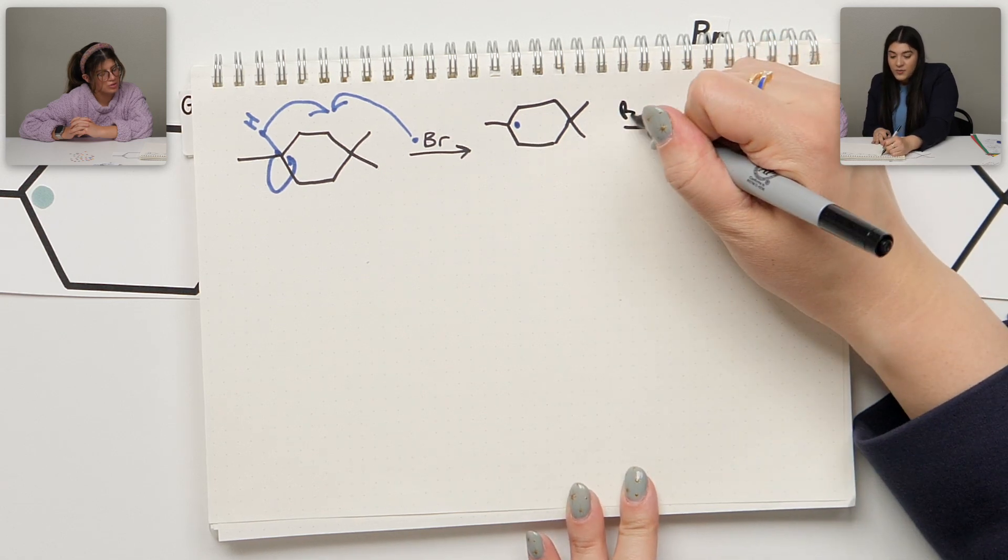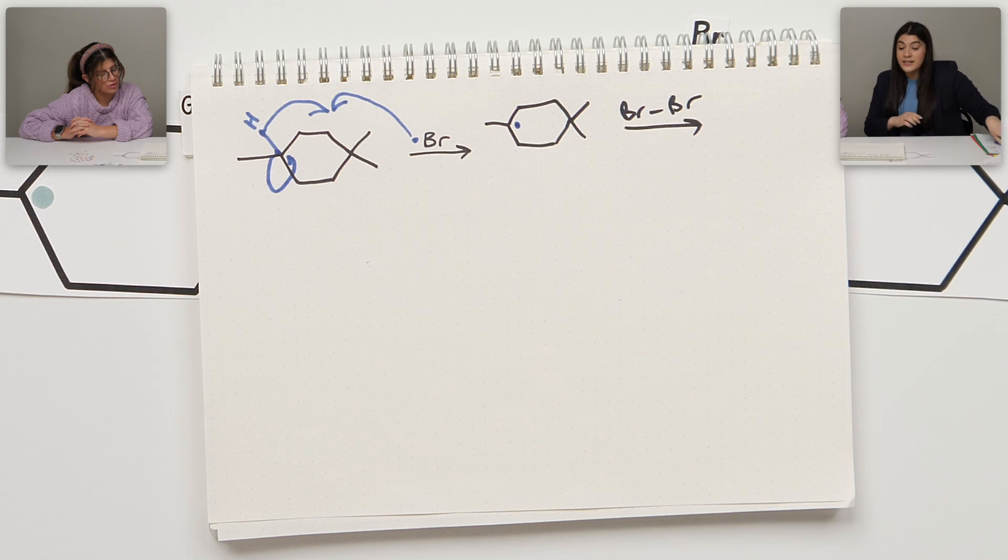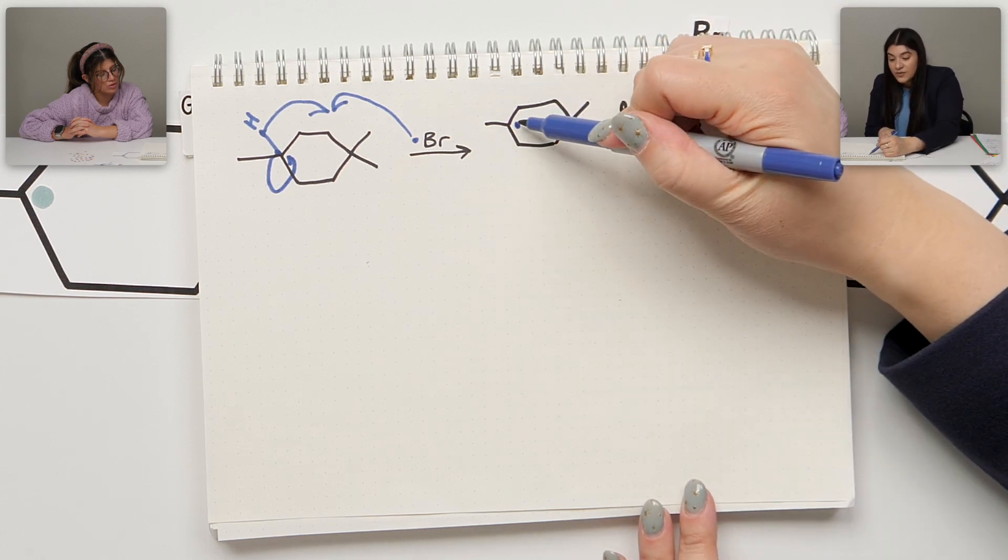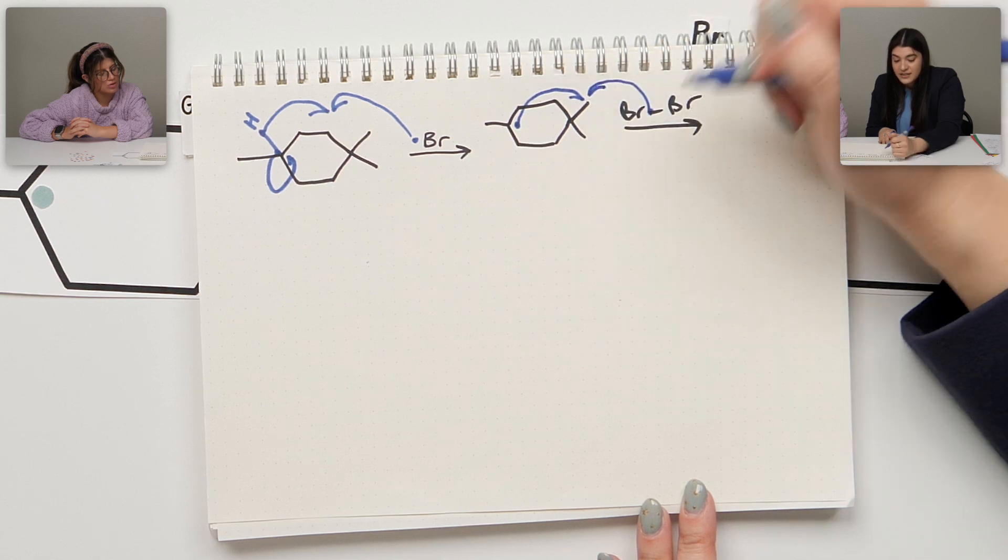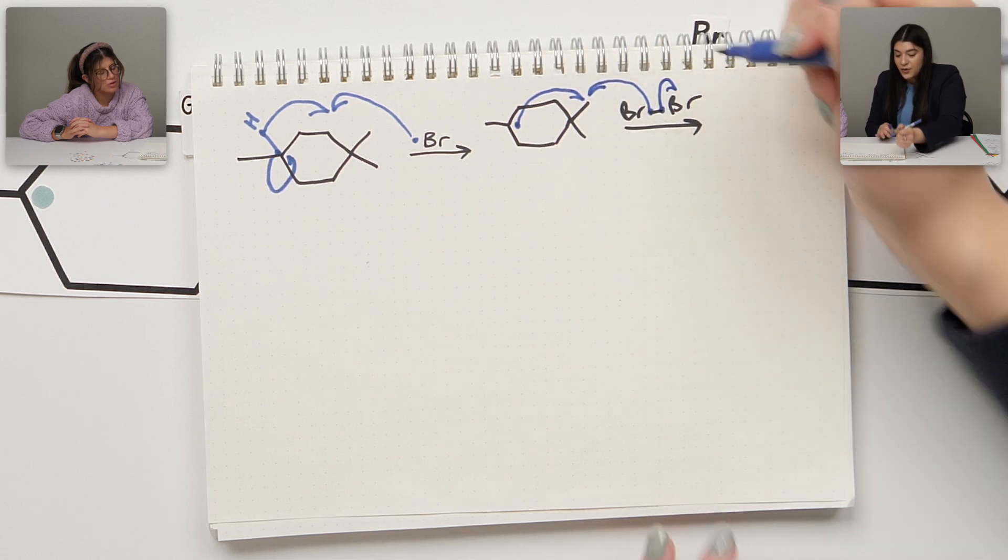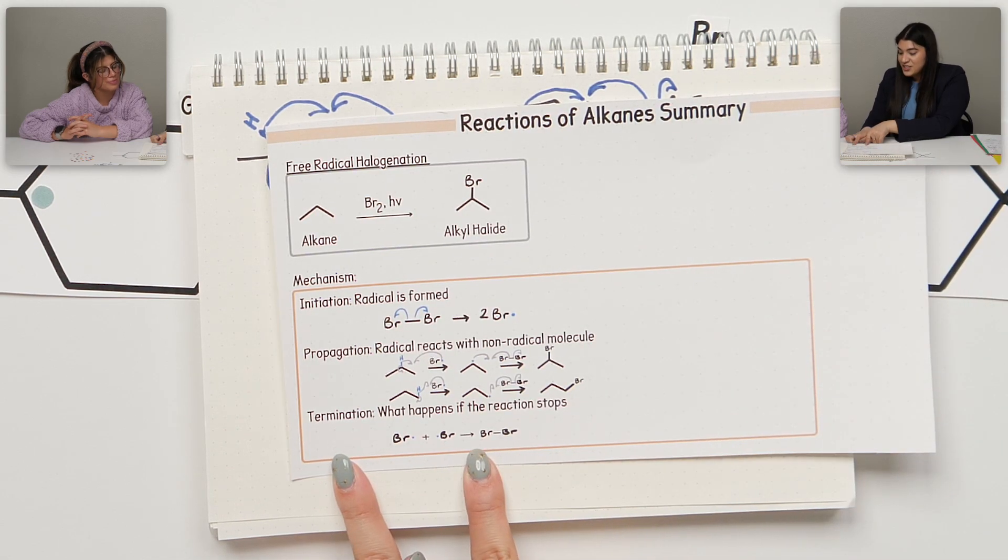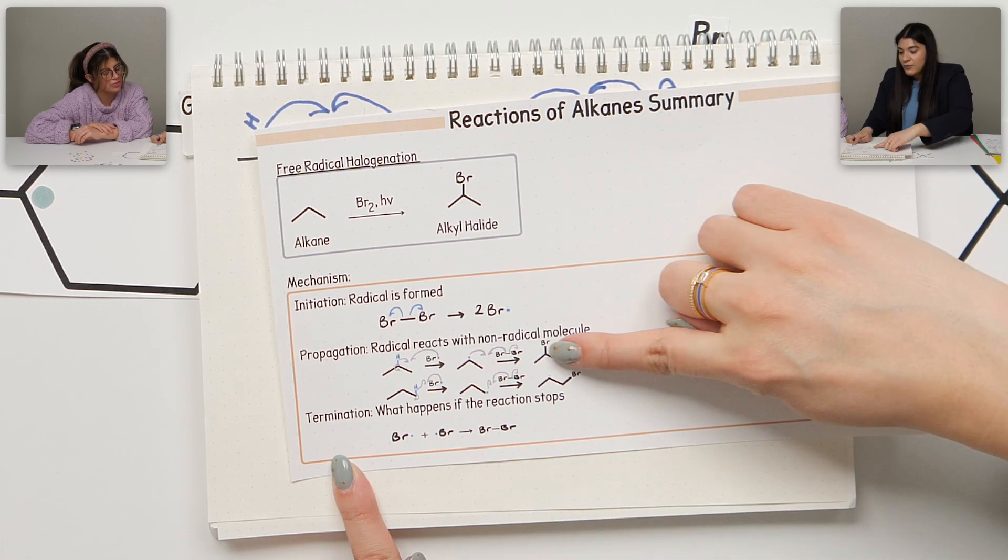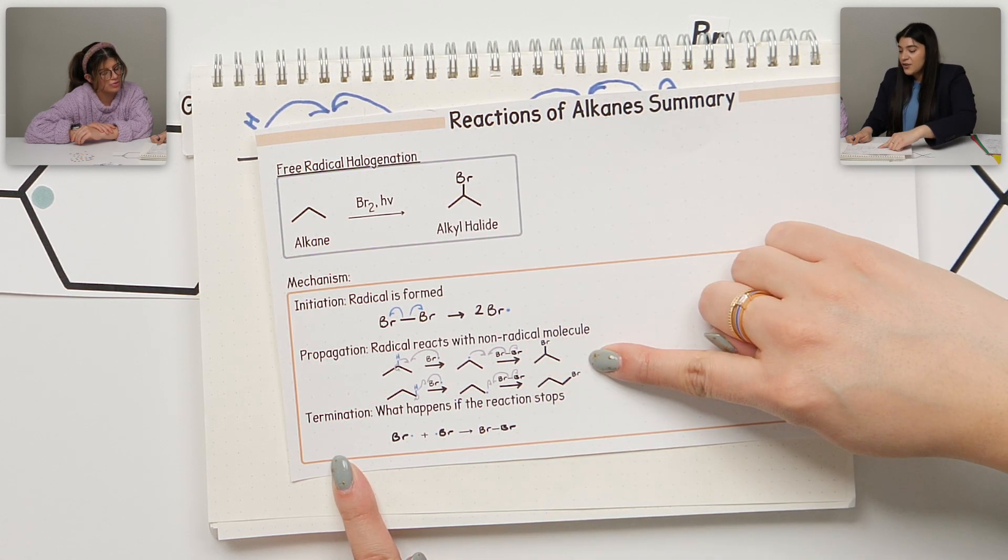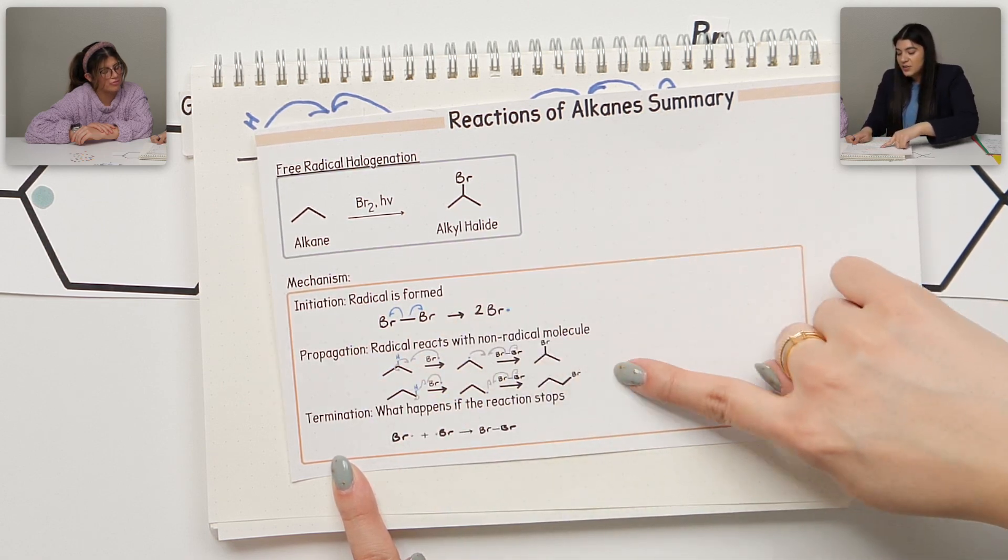So this electron combines with this electron to form that bond, and we reform the radical and it keeps going—propagation. Remember, it keeps going, we're not stopping the reaction, which is termination, which ends it with no radicals at all. However, we have to regenerate another radical. But propagation, I'd say that's the main step because that's what's actually forming our product.